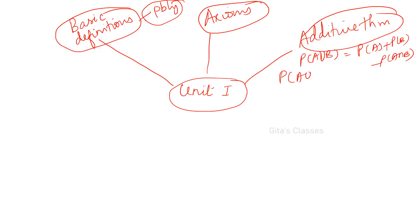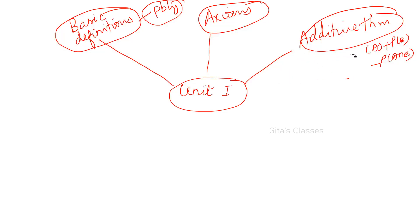P(A∪B) = P(A) + P(B) − P(A∩B). Similarly, P(A∪B∪C) = P(A) + P(B) + P(C) − P(A∩B) − P(A∩C) − P(B∩C) + P(A∩B∩C). The clue is: one at a time is positive, two at a time is negative, three at a time is positive — alternating signs. This pattern can be extended for more variables.